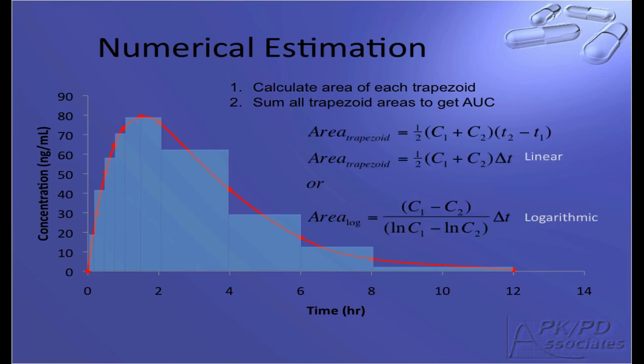To calculate the area of each trapezoid, we can use these equations. The area is equal to the average of the two concentrations times the time interval. This is called the linear trapezoidal method. As you can see, the linear trapezoidal method does not always accurately capture the AUC. Thus the logarithmic trapezoidal method was developed using a log linear average of the two concentrations times the time interval to estimate the area.